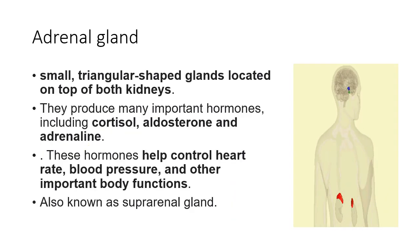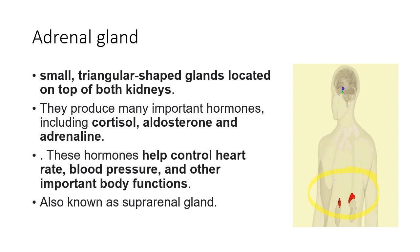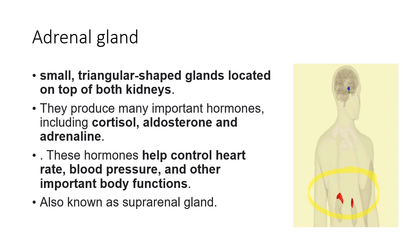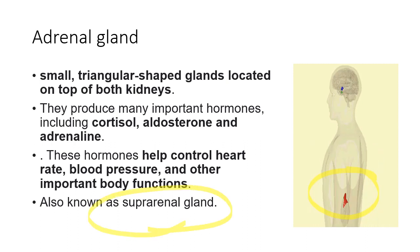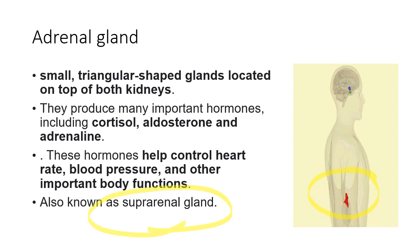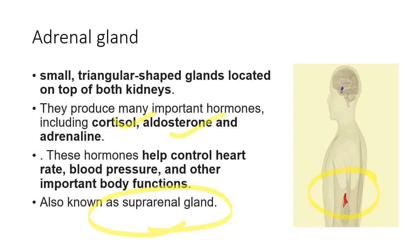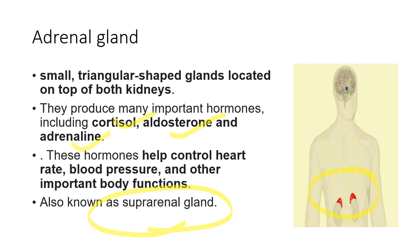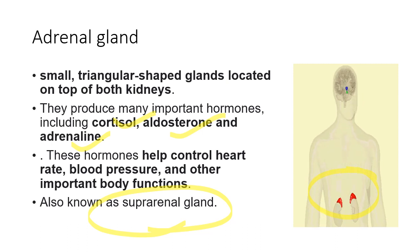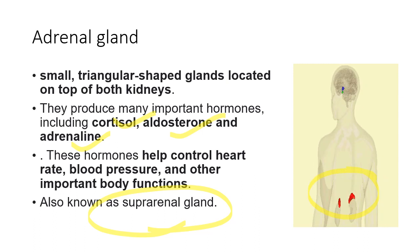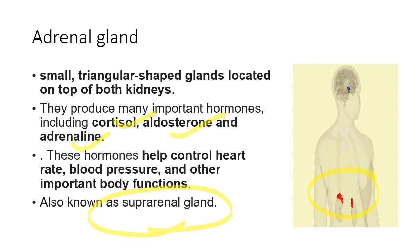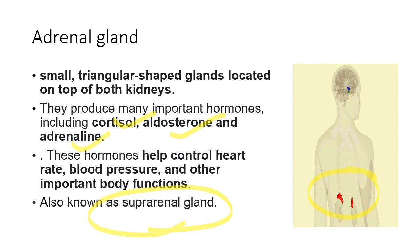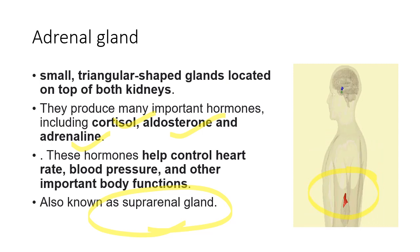Next is the adrenal gland. The adrenal gland is present on top of the kidneys, triangular in shape. It is also called the suprarenal gland because it sits above the kidney. It mainly produces cortisol, aldosterone, and adrenaline. It is also called the fight-and-flight hormone because in any dangerous or frightening situation, the adrenal gland releases adrenaline, which controls heart rate and blood pressure. So the adrenal gland is also a very important gland.